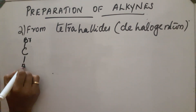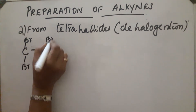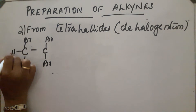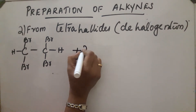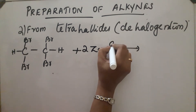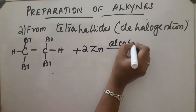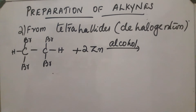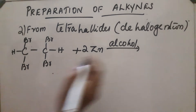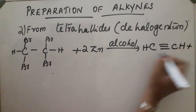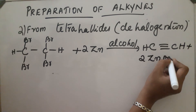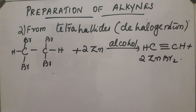Take one example: a compound with four Br atoms (tetrahalide). This reaction takes place in the presence of zinc dust and alcohol. The compound gets converted into an alkyne, and two ZnBr2 are produced as byproducts. This is the second preparation — dehalogenation of tetrahalides.